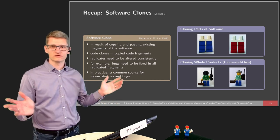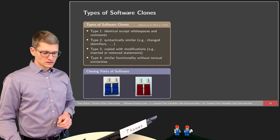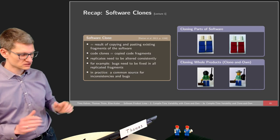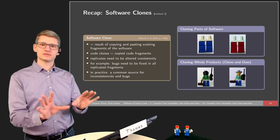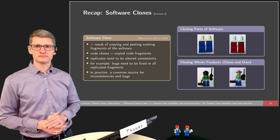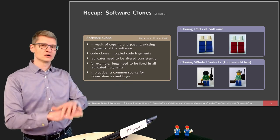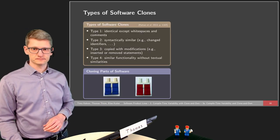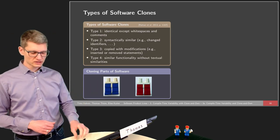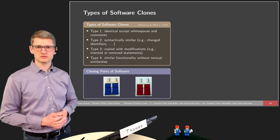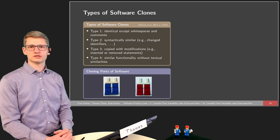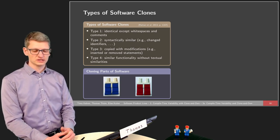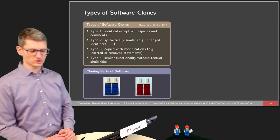In clone and own, the idea is not to copy fragments of software as done with software cloning, but rather to copy the whole product — in our case, the entire graph library. Software clones come in different flavors; there are typically four types. Type 1 means clones are identical except for whitespaces and comments — for example, copied statements with different indentation, or a Javadoc comment that was changed. Type 2 means syntactically similar: the general structure is highly similar, but perhaps an identifier was renamed, resulting in essentially the same abstract syntax tree except for name changes.